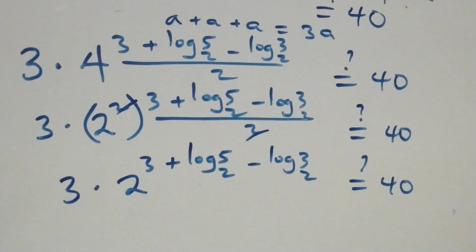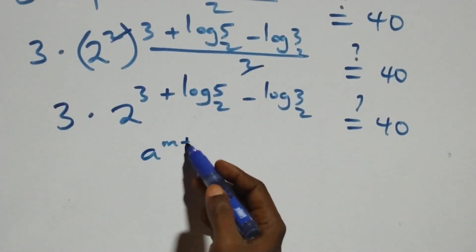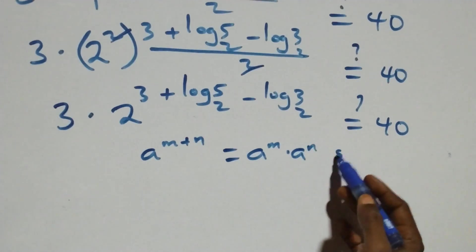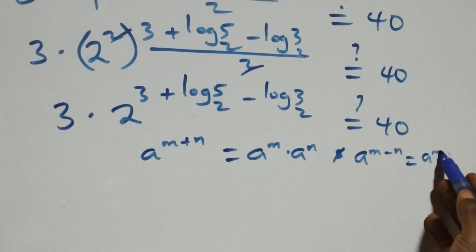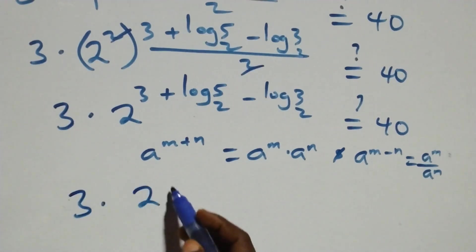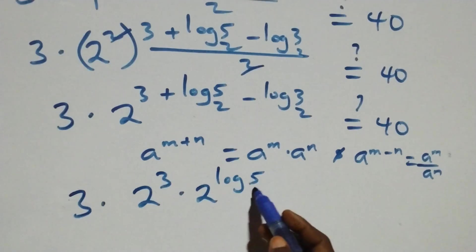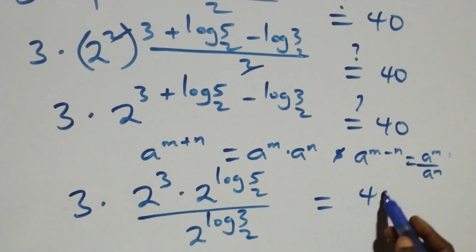Next step, we express 4 as 2 squared. We apply the law of indices: a raised to power (n plus n) equals a raised to power n times a raised to power n, and a raised to power (n minus n) equals a raised to power n over a raised to power n. So we have 3 times 2 raised to power 3, times 2 raised to power log 5 base 2, divided by 2 raised to power log 3 base 2. Is this equal to 40?